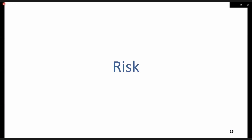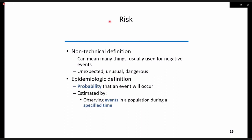What does risk have to do with epidemiology? Before we discuss more measures, let's have an overview of what risk is. Commonly used, the term risk can mean many things and is usually used for negative events. As epidemiology is a precise science, there is a clear definition of risk. The nature of risk is probabilistic and the usual question raised about risk is: what is the probability that an event will occur? Risk is estimated by observing events in a population during a specified time.